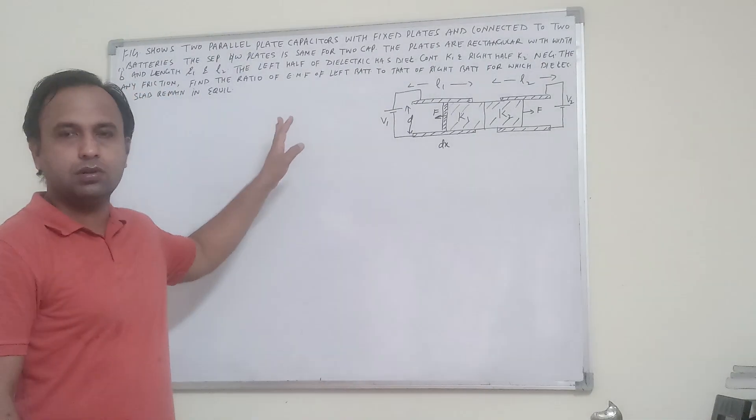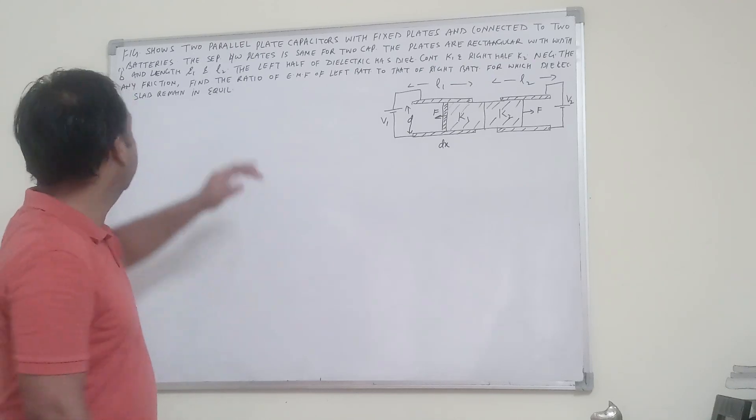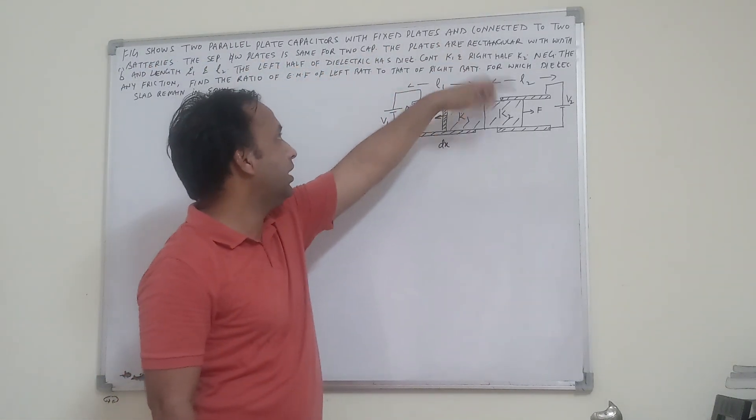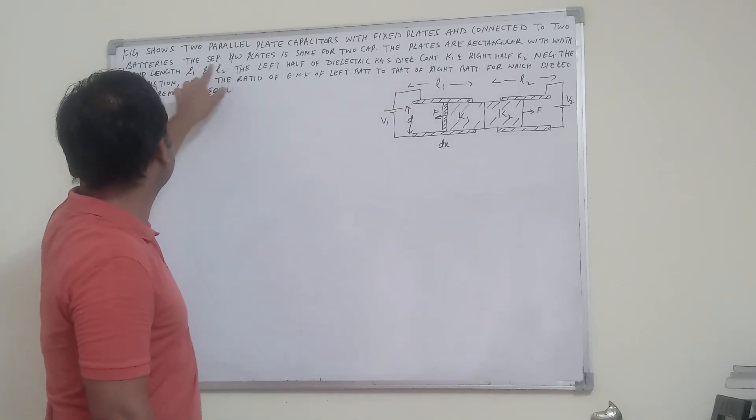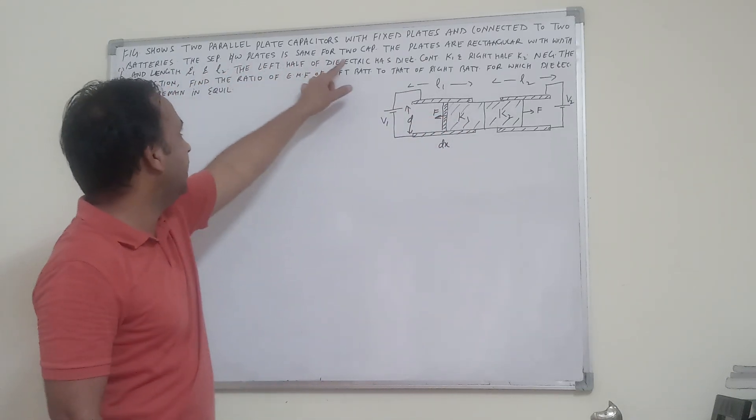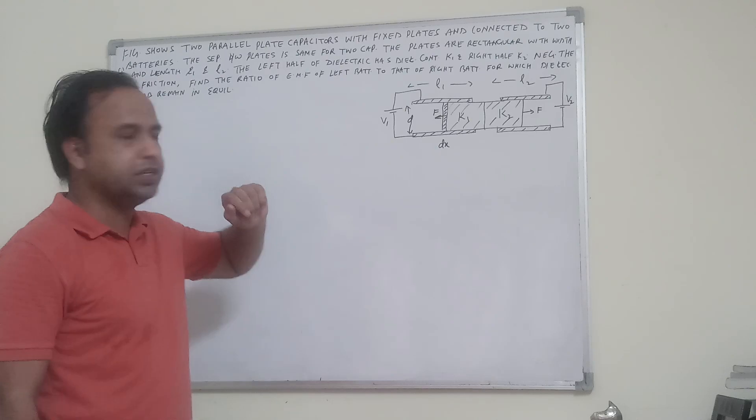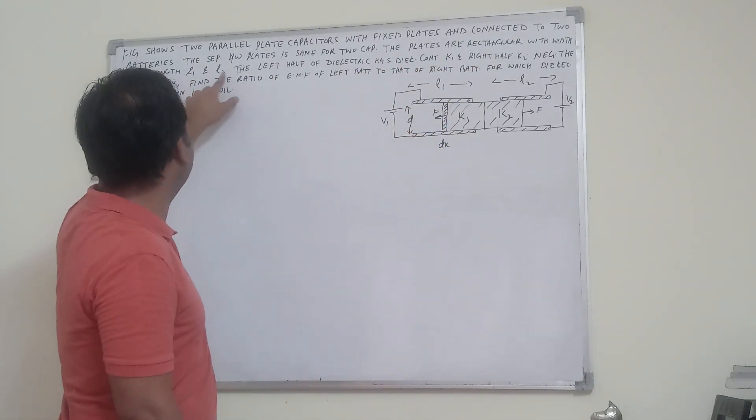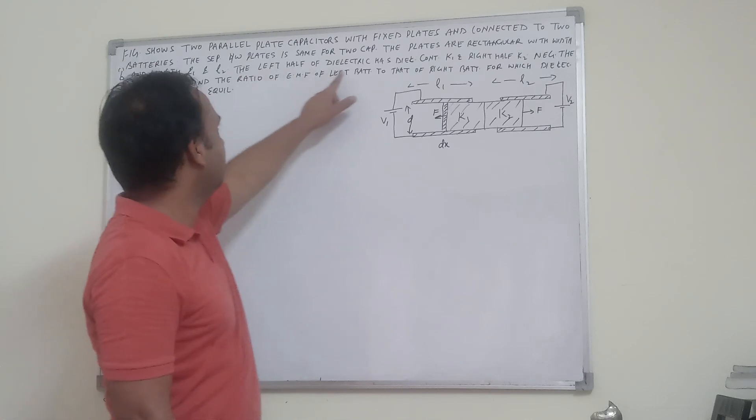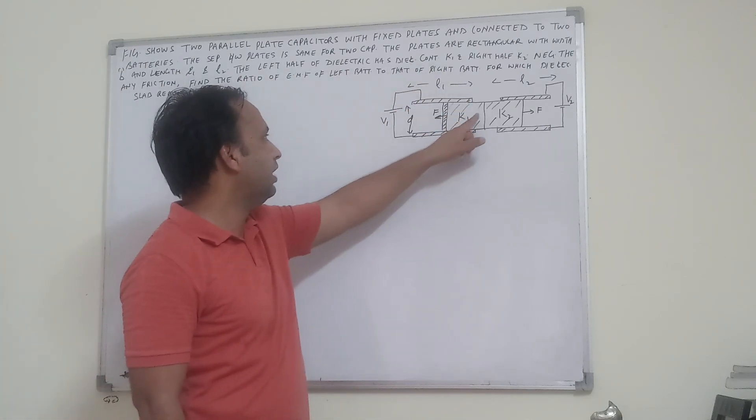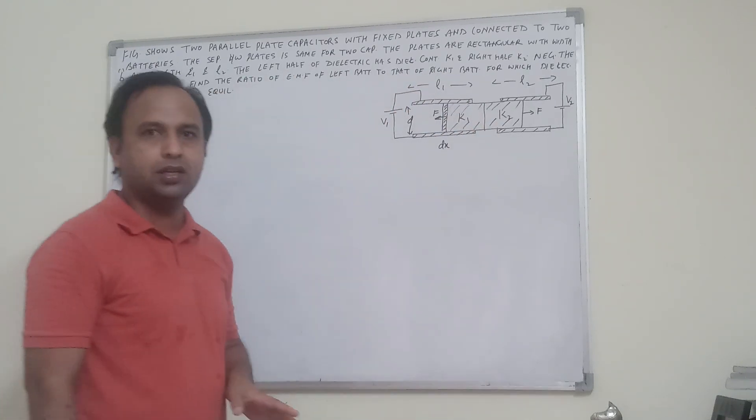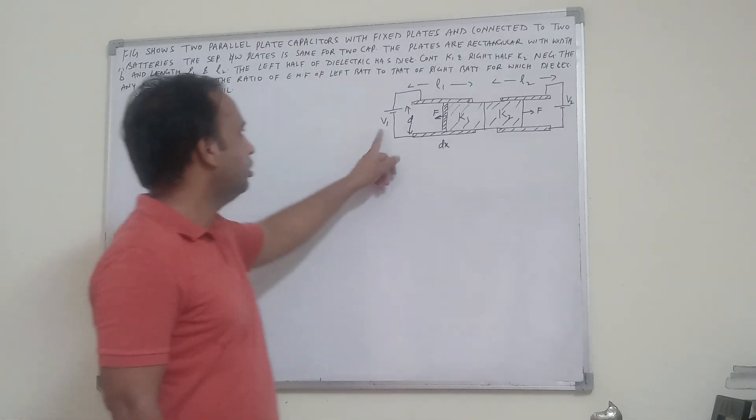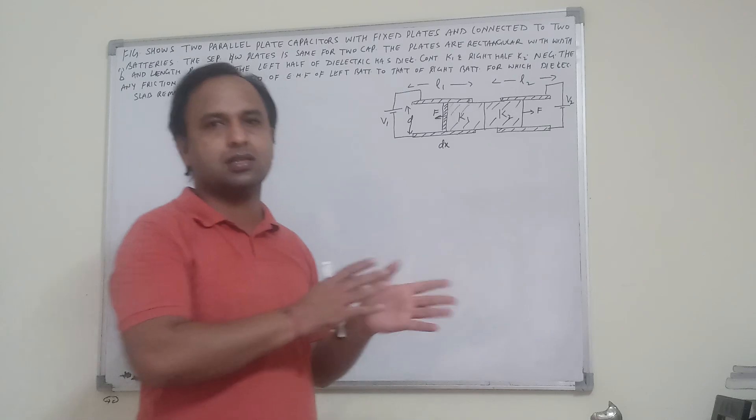Hello, this is one of the first questions we have done. Figure shows two parallel plate capacitors with fixed plates and connected to two batteries. The separation between the plates is same for two capacitors, suppose DA. The plates are rectangular with width D and length L1 and L2. The left half of dielectric has dielectric constant K1 and right half has dielectric constant K2. Neglecting any kind of friction, find the ratio of these voltages such that the system is in equilibrium.